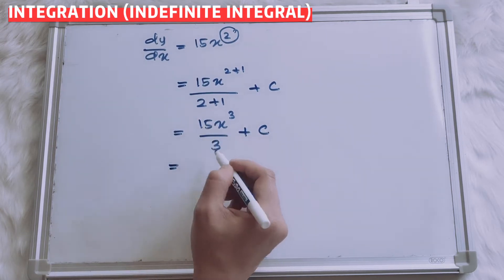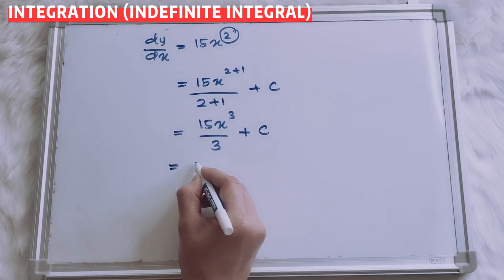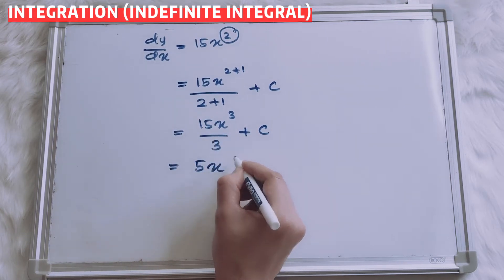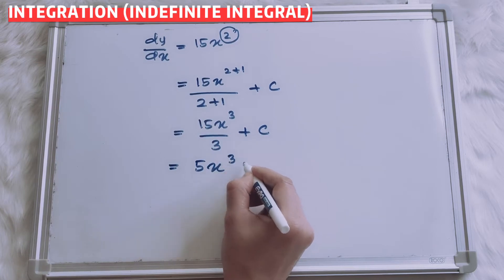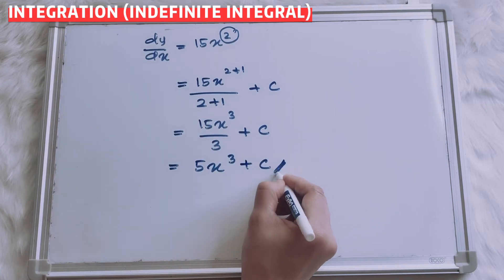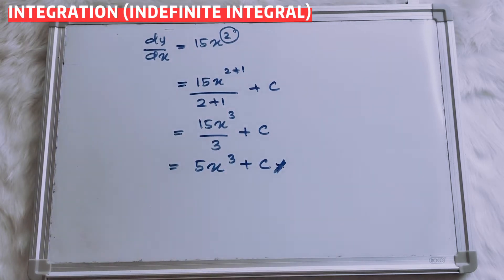Simplify: 15 divided by 3 means 5x cubed plus C. Alright. Next.